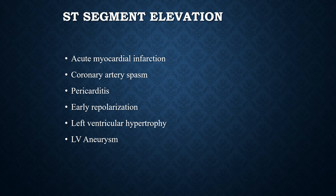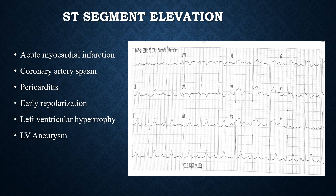Let's discuss these differentials considering the ECG parameters. Starting with coronary artery spasm: based on the history and the ECG findings — including the Q waves, T wave inversions, and the persistent ST elevations — coronary artery spasm is not the likely diagnosis. Pericarditis is also unlikely because although there are ST segment elevations, there is no PR depression, no PR elevation, no ST depression in AVR, and this is not a generalized ST elevation.